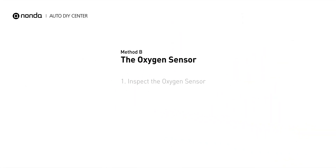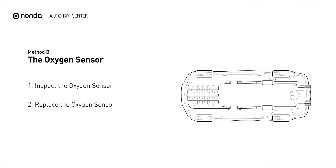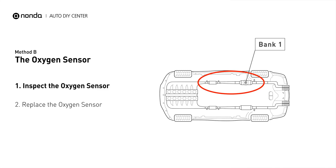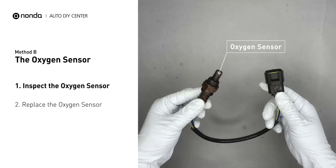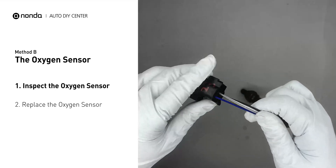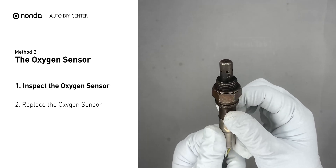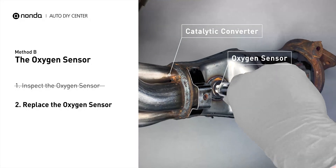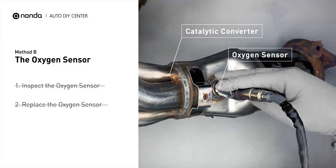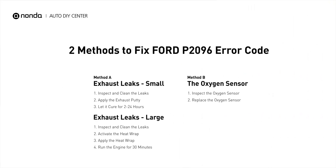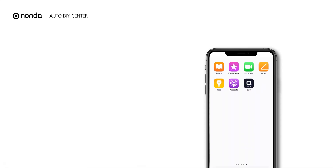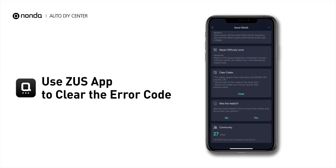Method B: Oxygen Sensors. The oxygen sensors are located before and after the catalytic converter. Bank 1 is on the side with cylinder number 1. Visually check the oxygen sensor's electrical connections, wire harness, and metal tabs for any damages. If damages are found, replace the oxygen sensors. After the repair, you can use the Zeus app to clear the error code.